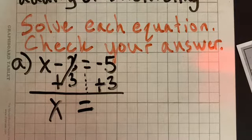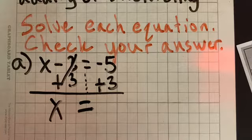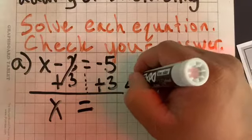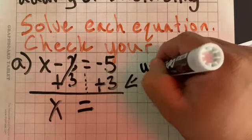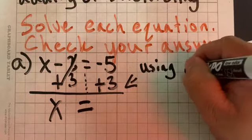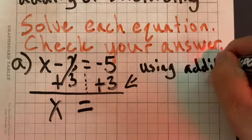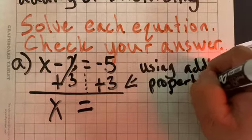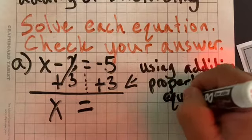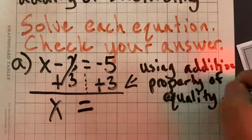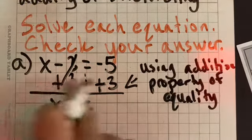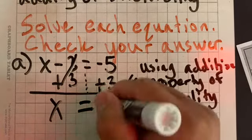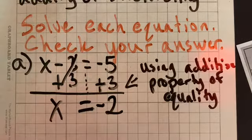And I'm left with negative 5 plus 3. Give you guys a couple of seconds to determine what that number is. While you do that, I want you to write this down as well. We are using the addition property of equality because we added 3 to both sides. Now back to our final answer. X is going to equal negative 2.